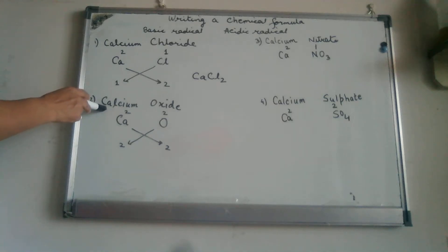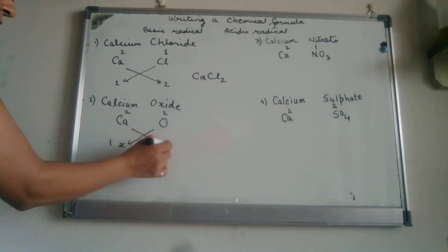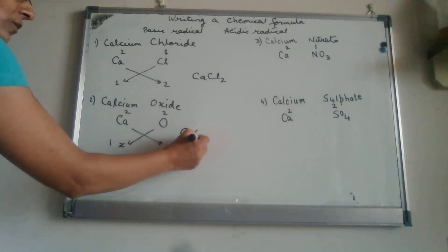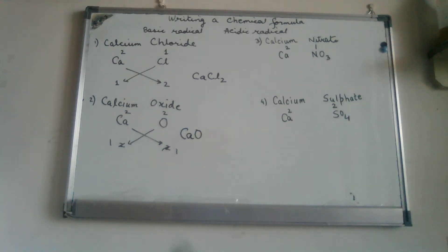We go on to the second example, calcium oxide. Calcium having a valency of 2, oxide having a valency of 2 again. Cross the valencies 2 times 1, 2 times 1 and we have the formula of calcium oxide as CaO. Mind you, here the A has to be small and not capital.